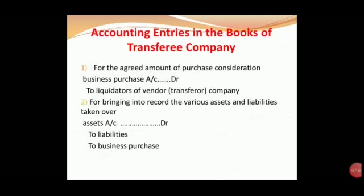Accounting entries in the books of the Transferee Company. For the agreed amount of purchase consideration — the purchase consideration amount is recorded. The entry in the book is: Business Purchase Account debit, to Liquidators of Vendor Company. That is the Transferee Company entry. For companies A and B: Business Purchase Account debit, to Liquidators of A Company and Liquidators of B Company — that is the first entry.